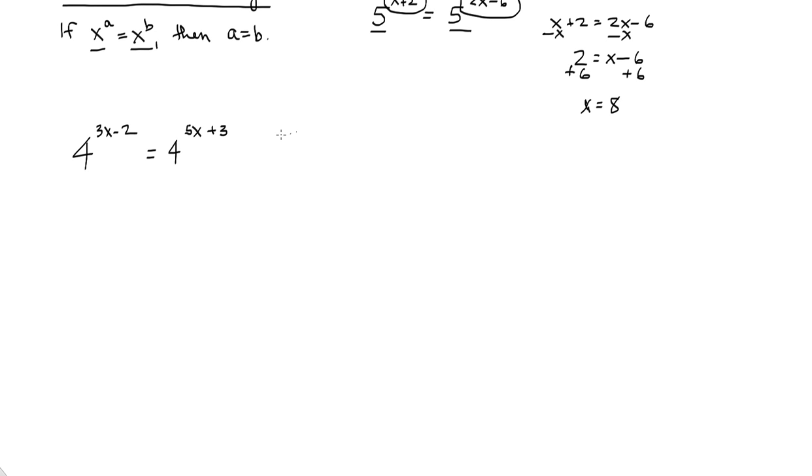Alright, here we go. Single term on each side, both the same base, so we can set the two exponents equal to each other. Subtract 3x from both sides. I get negative 2 equals 2x plus 3, subtract 3 from both sides. I get negative 5 equals 2x, divide by 2, x equals negative 5 halves.